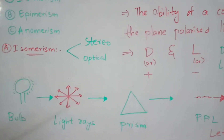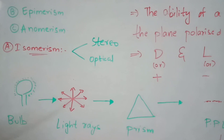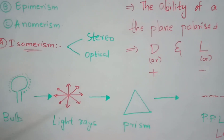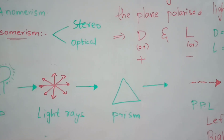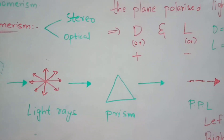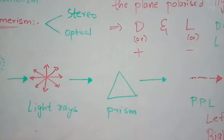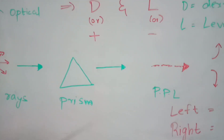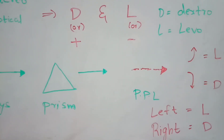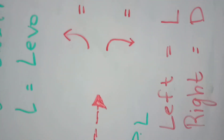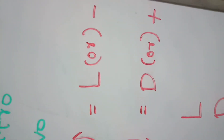When you place a prism in the path of these polychromatic light rays, the prism converts them into monochromatic light. This monochromatic light acts as plane polarized light (PPL). If this plane polarized light turns towards the left side, it is denoted as L or minus, which stands for levo.